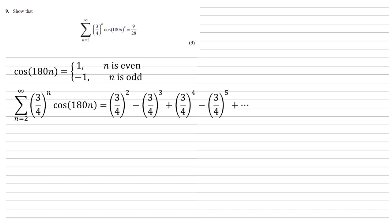So we've now got a geometric sequence and we can see quite quickly now that the first term is obviously 3 quarters squared, so 9 over 16.